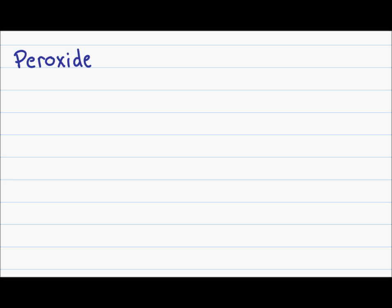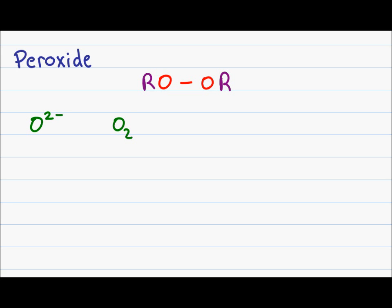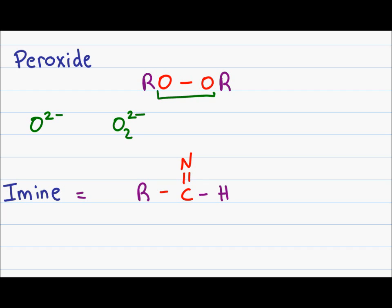A peroxide group is characterized by having an oxygen directly bound to another oxygen in a molecule. This can occur as hydrogen peroxide, a common disinfectant, or an alkyl peroxide, which has two R groups on either side of the oxygen. Recall that the oxide ion has a charge of negative two, but the peroxide, which is O2 two-minus, is characterized by two oxygens directly bound to each other. The last group we'll look at today is the imine, which is characterized by having a carbon double-bonded to a nitrogen. This can occur at the end of the molecule, ending with an H, or in the middle of a molecule with another R group attached to the carbon.